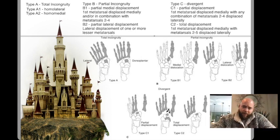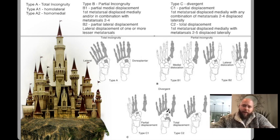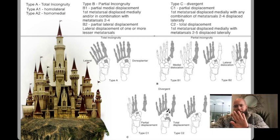Type A's are called total incongruity. A1 is all metatarsals go lateral. A2 is all metatarsals go medial.